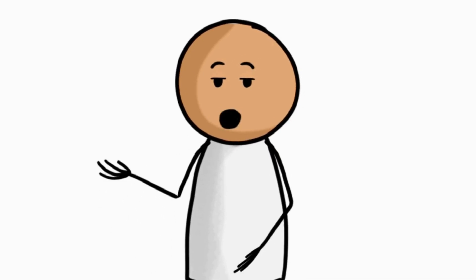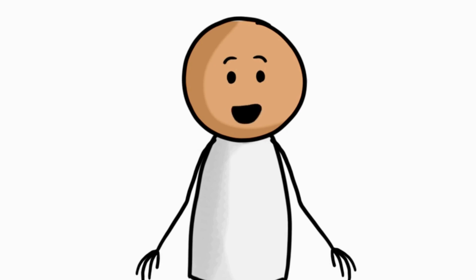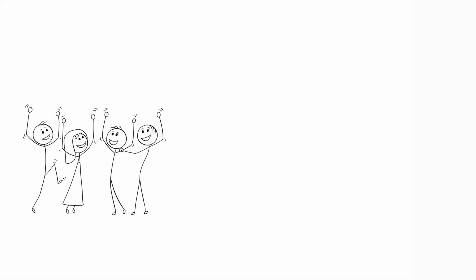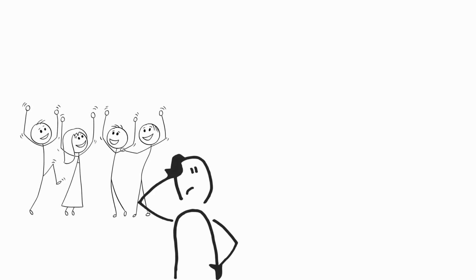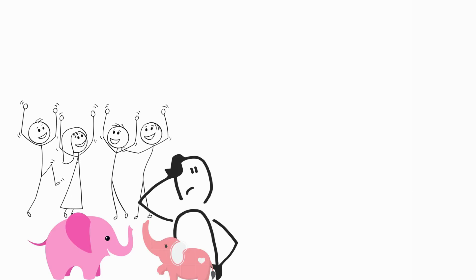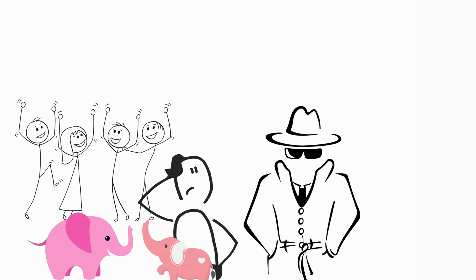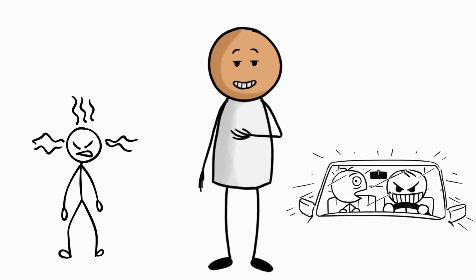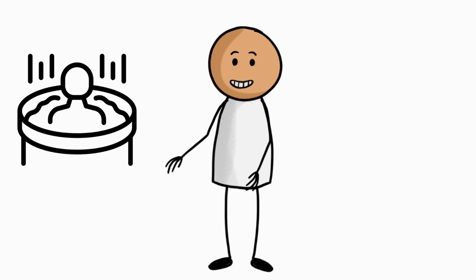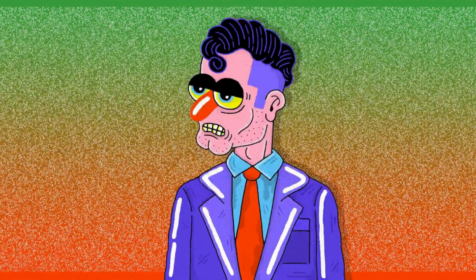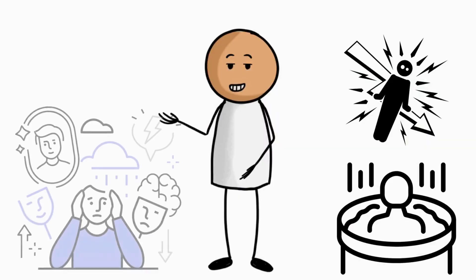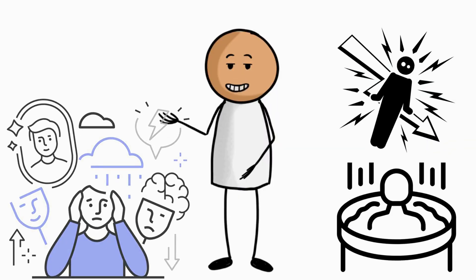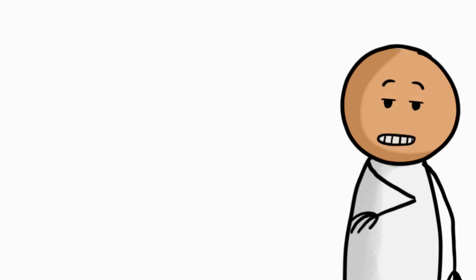They secretly dosed unwitting participants, often without their consent, including soldiers, prisoners, and everyday folks just trying to enjoy their morning coffee. You could be chilling at a party, and next thing you know you're seeing pink elephants because Agent Bob thought you'd make a great test subject. Doctors and scientists went all in with the experiments, pushing people's sanity to the breaking point. They even tried sensory deprivation tanks, electroshock therapy, and good old psychological torture. What's that? You're losing your mind? Perfect. We're getting results.